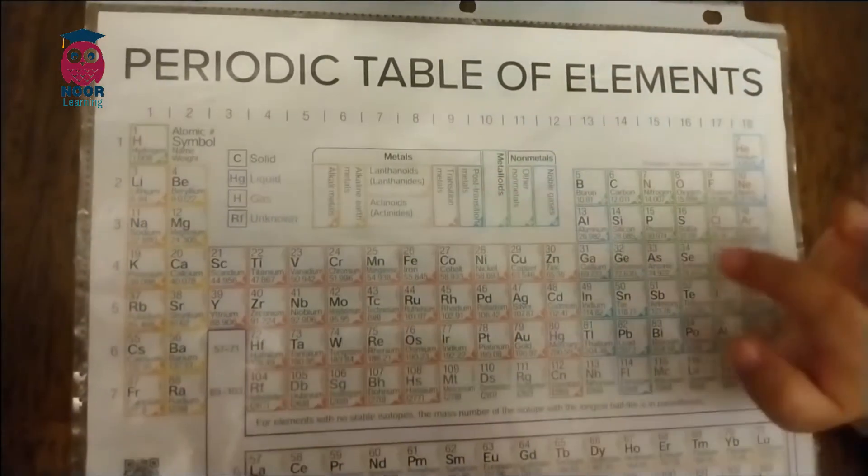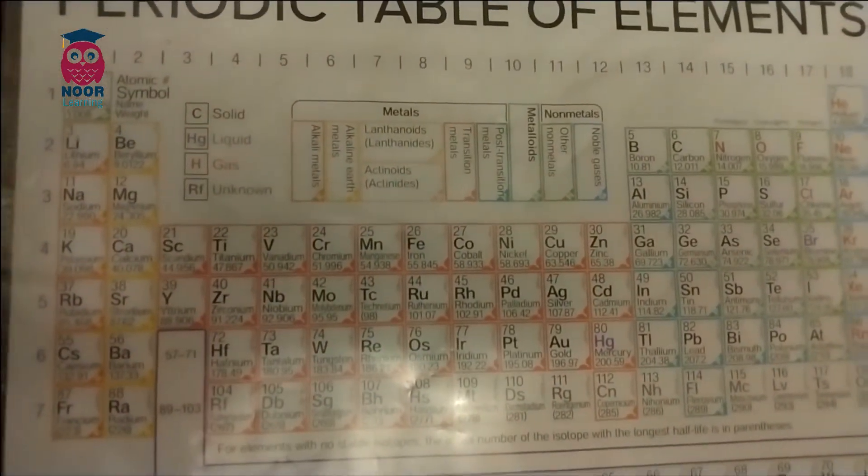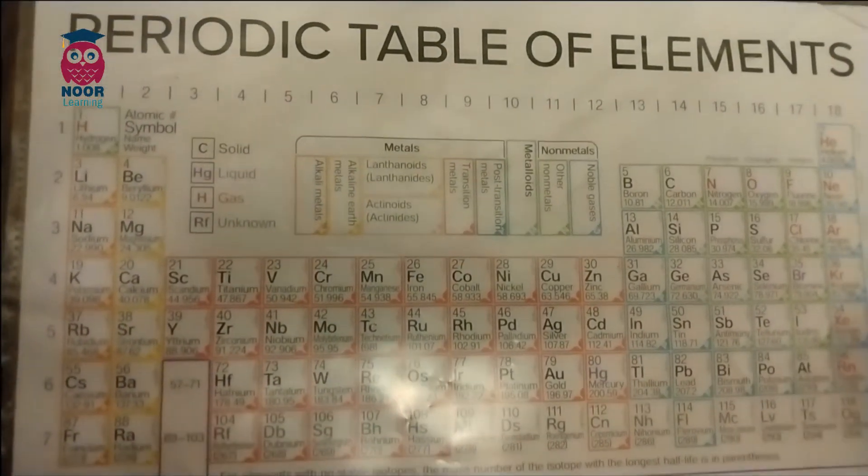Iron, this is 26. Cobalt, nickel, coins you get. Copper, zinc, and gallium, germanium, and arsenic, selenium, and bromine. Krypton helps light up your room.